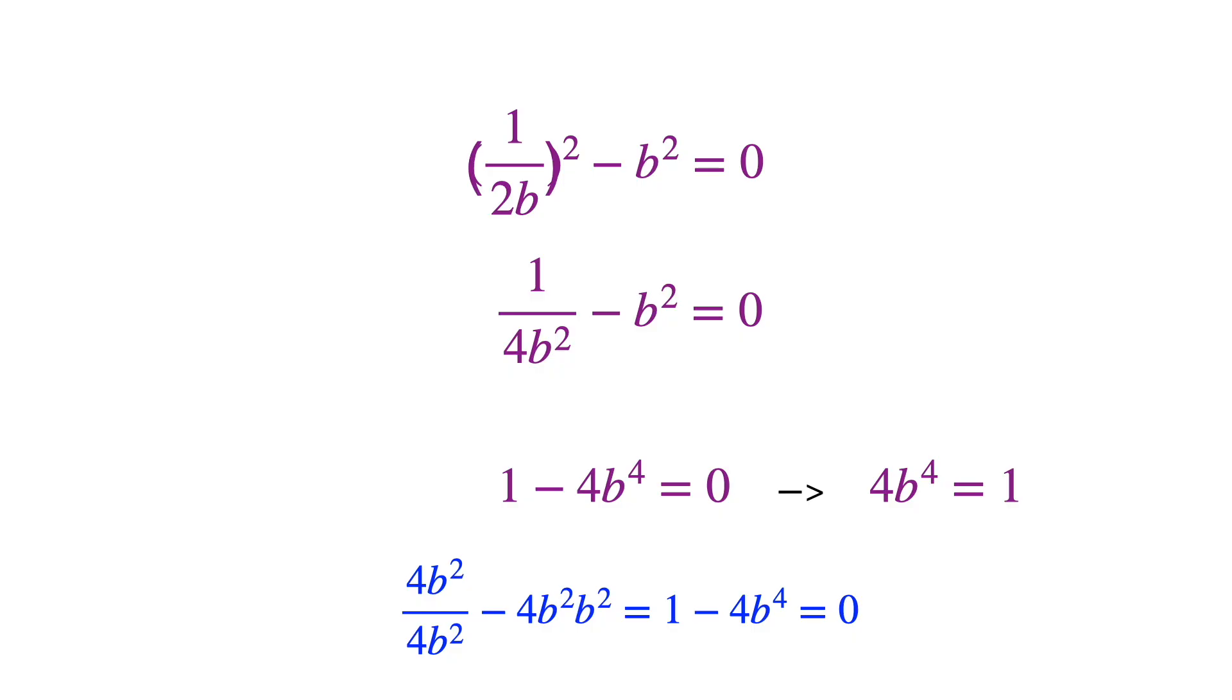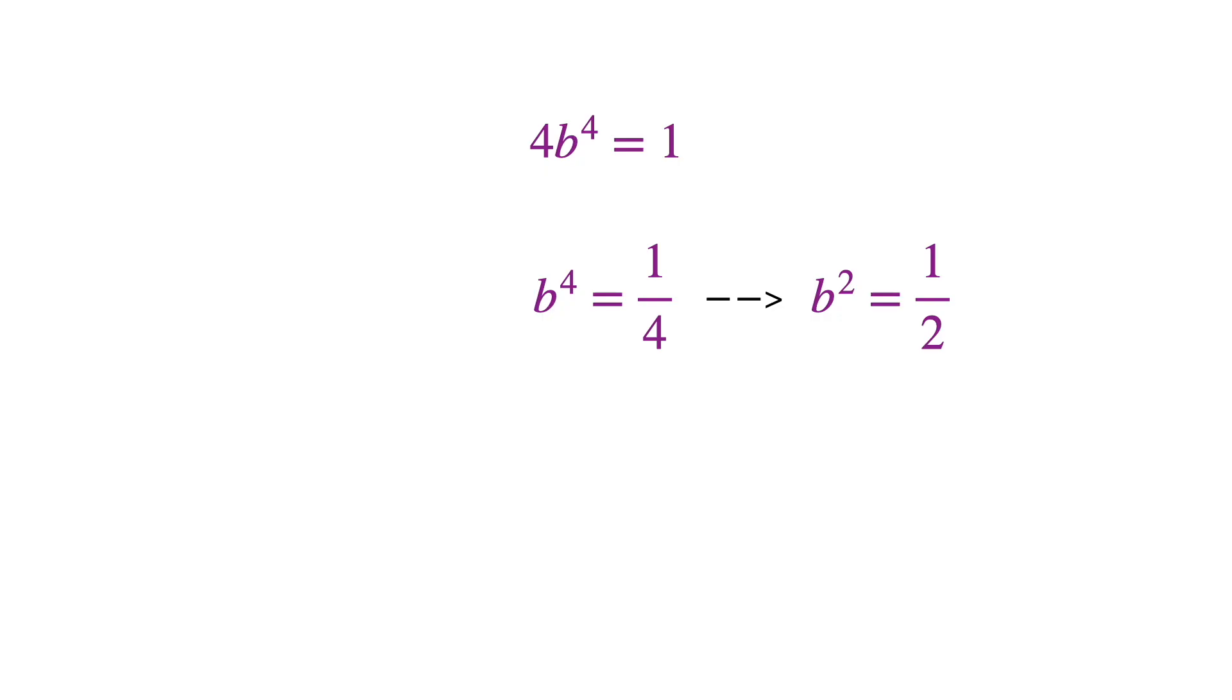On the left, we end up with 1 minus 4b to the 4th. So 1 minus 4b to the 4th is 0, which means 4b to the 4th has to be equal to 1. Solving that for b to the 4th gives us b to the 4th is 1/4.